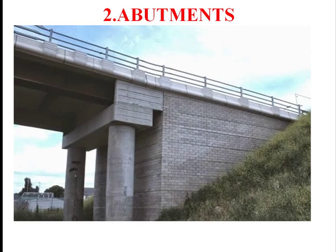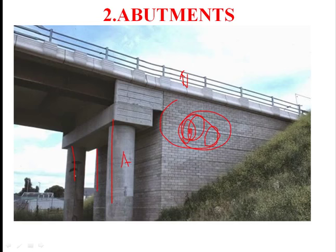Next is abutment. Looking at the photo: this is a parapet, and this support is the abutment. After the abutment, they construct a wall to fill up the soil. You have sloping soil here — to stop the fall or sliding of the soil, they construct a wing wall. Sometimes they also do pitching work: stones are fixed with cement concrete in proper position to avoid sliding of the soil on the slope sides.